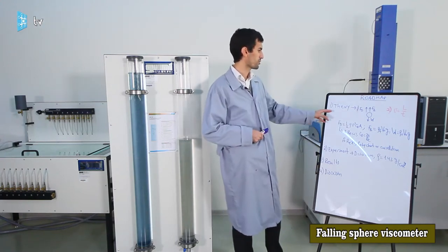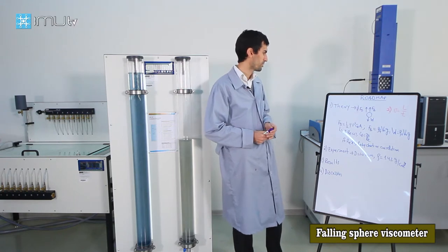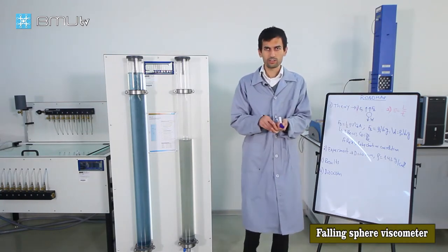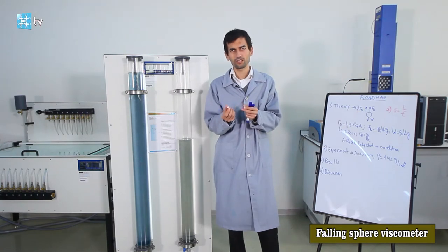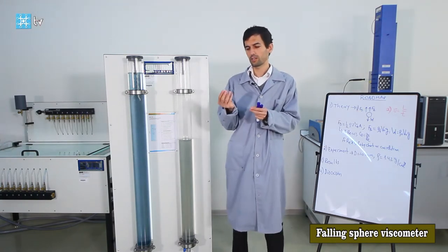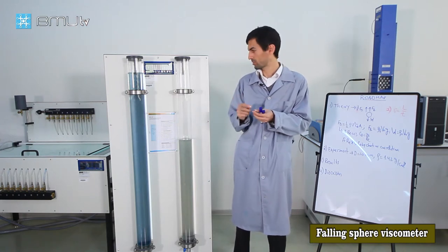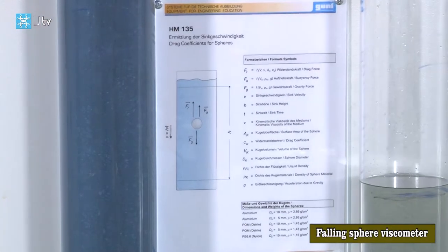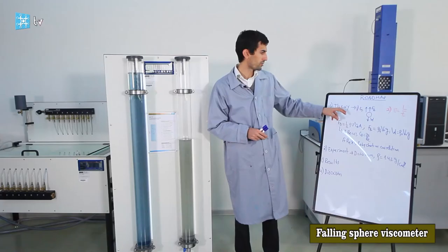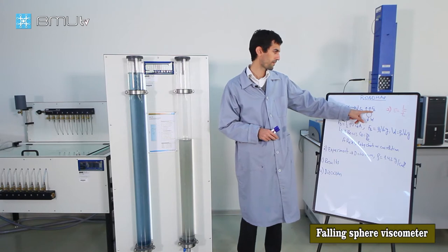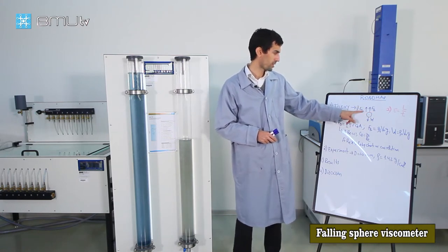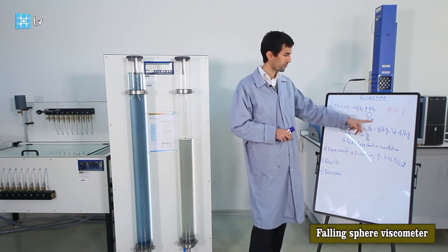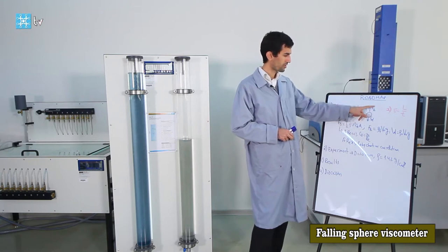Now I'll start with the theoretical part. In the theory, we have a falling sphere — I have two spheres in my hand. I will drop the spheres into those cylinders. I know the diameter and density of the sphere. When it falls through either fluid — water or glycerin — there are three forces acting on it: the buoyant force (Archimedes principle), the drag force (essentially the frictional force against the sphere), and the weight of the sphere.